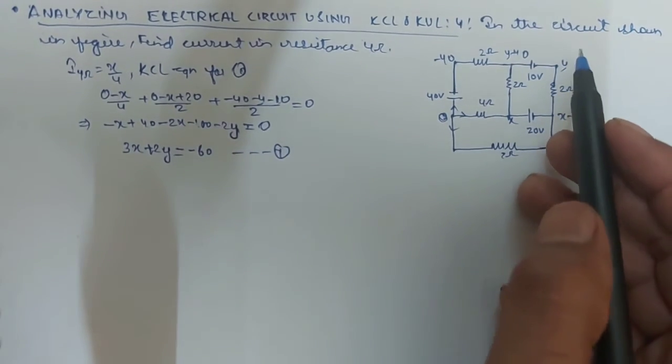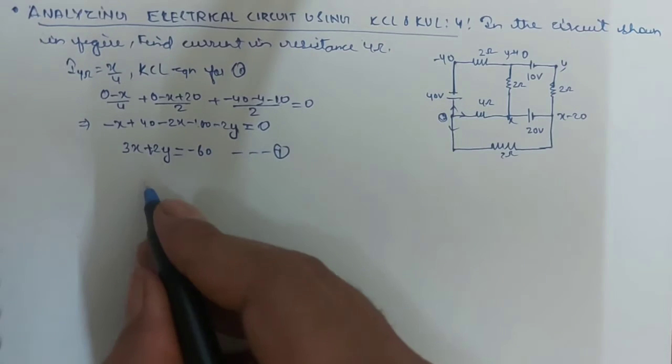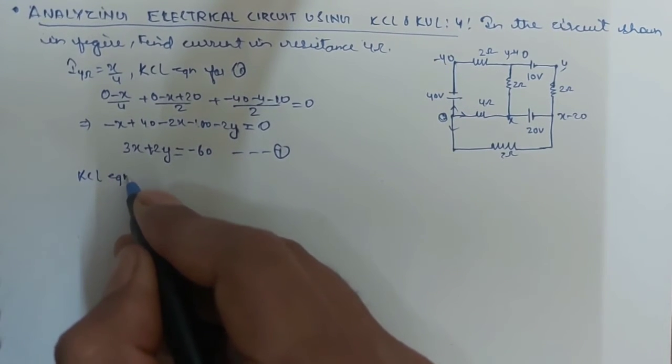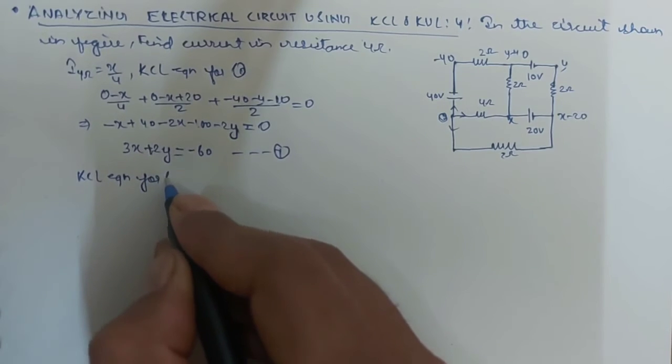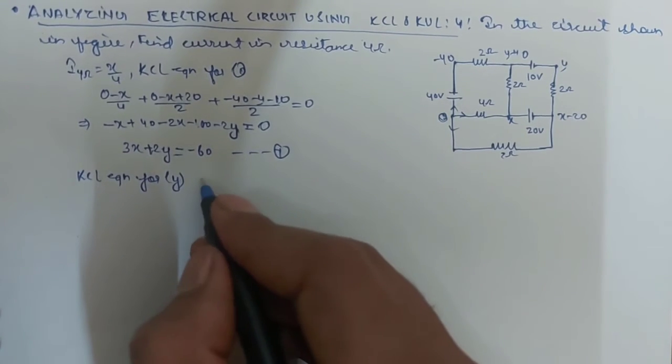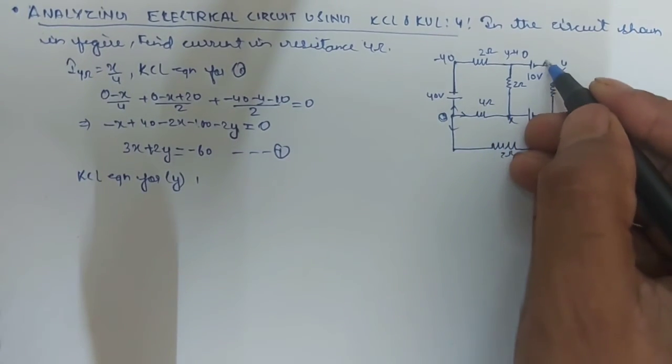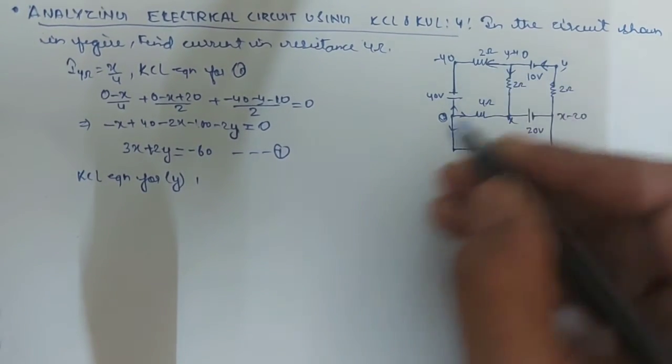Now, second, you have to choose for the y potential. So, KCL equation, equation for y. You will get, in this circuit, you can see that it is moving in this direction here and here.